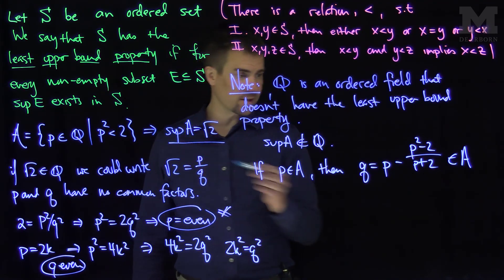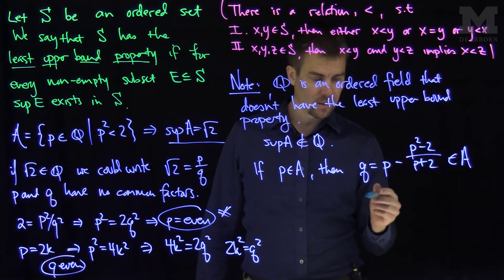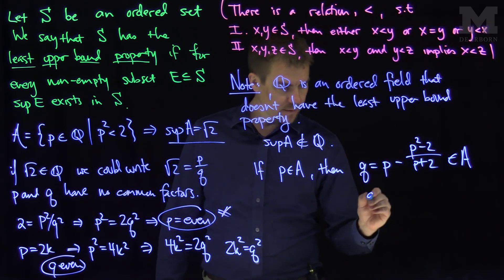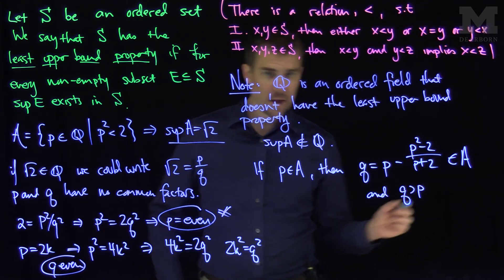Because p squared minus 2 is less than 0, so this is equivalent to adding something negative, and q is bigger than p.